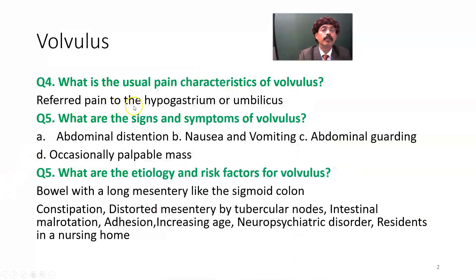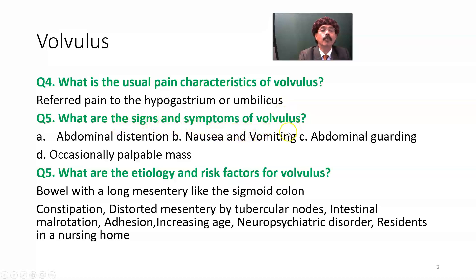What is the usual pain characteristic of volvulus? Referred pain to the hypogastrium or the umbilical region of the abdomen. What are the signs and symptoms of volvulus? Abdominal distension, nausea or vomiting, abdominal guarding, and occasionally a palpable mass that the physician or medical student can find.